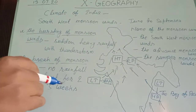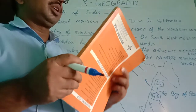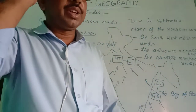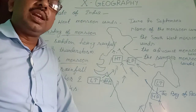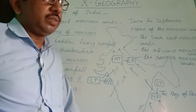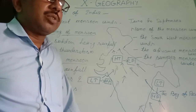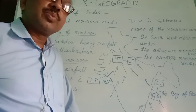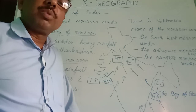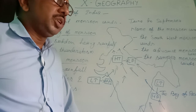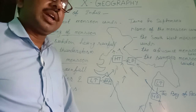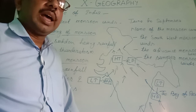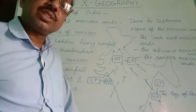One more point in the same topic: Kerala is the first state that experiences the incoming of monsoon winds — the monsoon winds enter India first through Kerala. Kerala also experiences the withdrawal of monsoon winds last — the monsoon winds depart last from Kerala. So Kerala is the first state for both the arrival and the departure of monsoon winds.